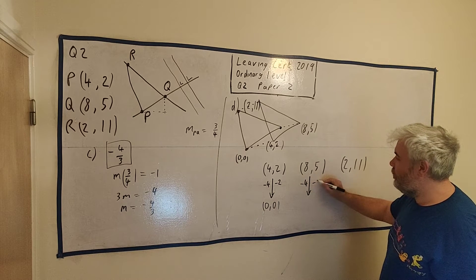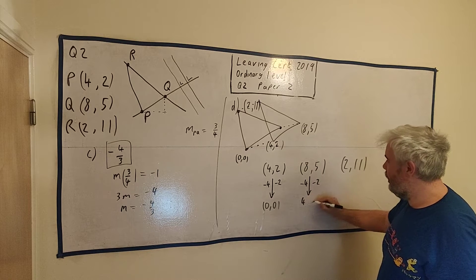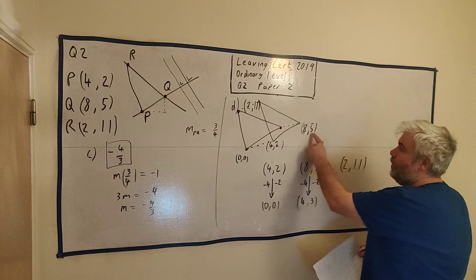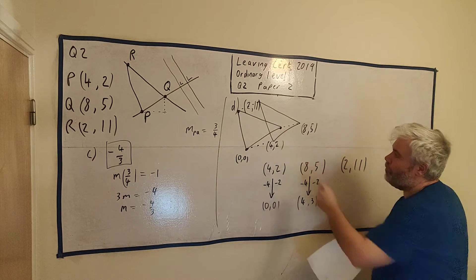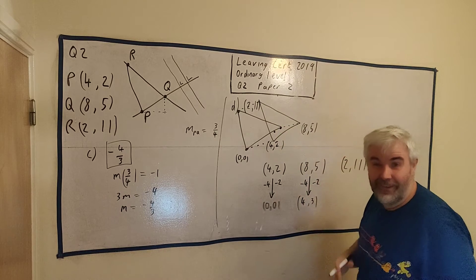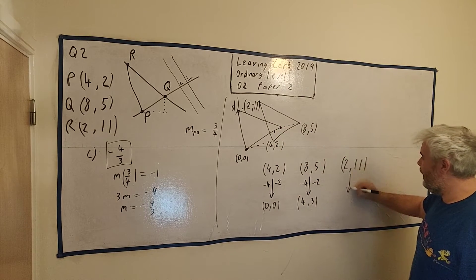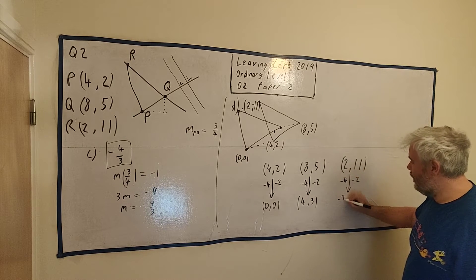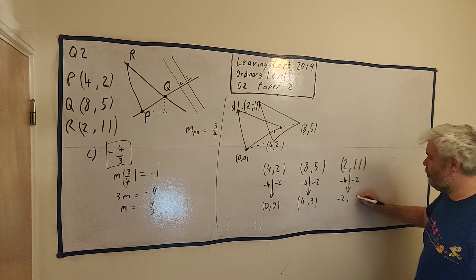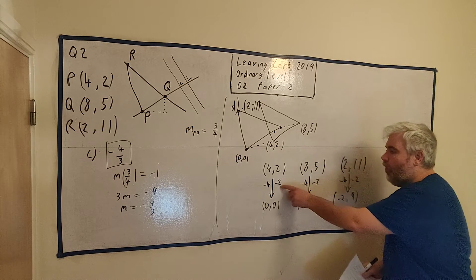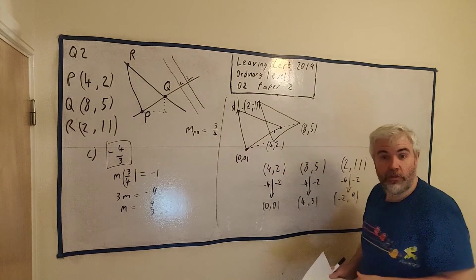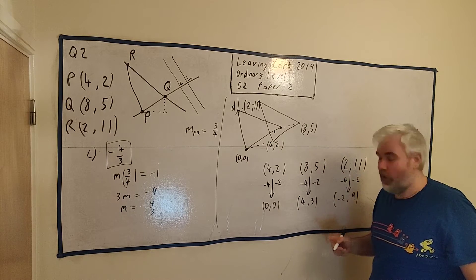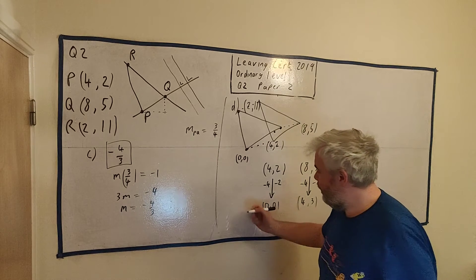Let's move this guy the same way. I took 4 away and 2 away. 8 minus 4 is 4, 5 minus 2 is 3. So Q becomes (4, 3). Let's move R: 2 minus 4 is minus 2, 11 minus 2 is 9. So I've moved all of these in the same way. This triangle is easy to do. We have a formula for that.